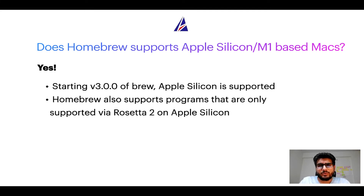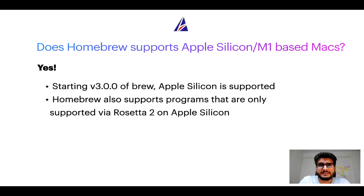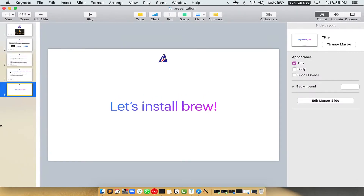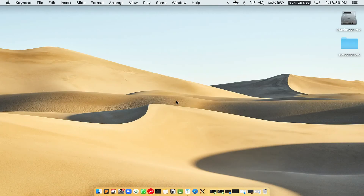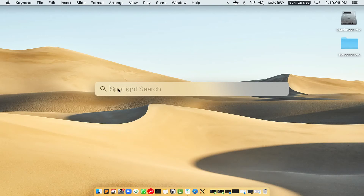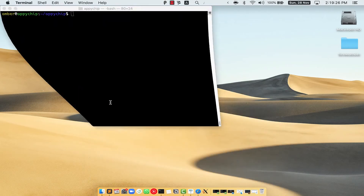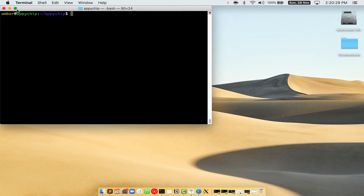Now that I have answered your questions on safety and compatibility of Homebrew, let's get to the installation process. Before we can install anything using brew, we need to install the package manager itself on your Mac. To begin, press Command and Space on your keyboard to open Spotlight Search, then type terminal.app. You will see the Terminal app — simply double-click on it to open Terminal. Let me maximize this Terminal window.